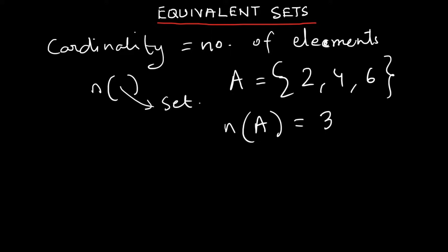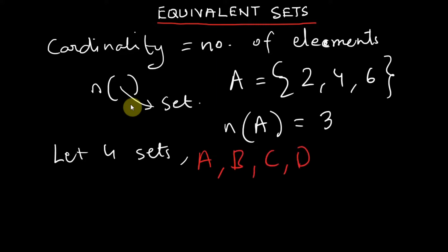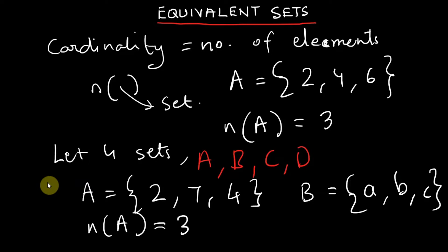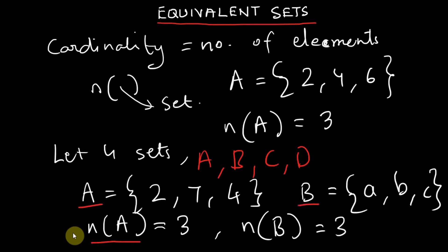Let's look at four sets A, B, C, and D. Let A = {2, 7, 4} and B = {a, b, c}. The cardinality of A is n(A) = 3, and the cardinality of B is n(B) = 3. Since they have the same cardinality, we can say that set A and set B are equivalent.